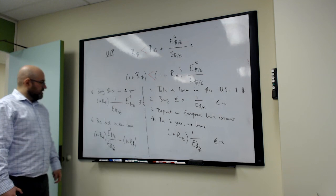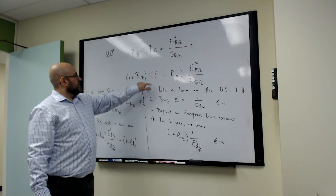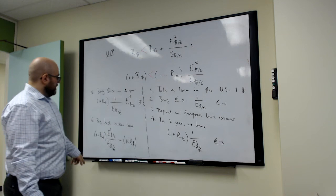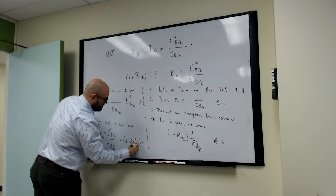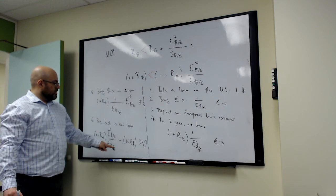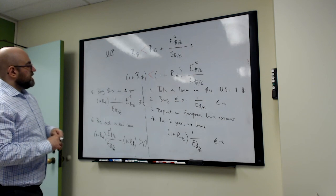And because we assume that the interest rate, the dollar return in the US is lower than the dollar return in Europe, this is exactly the right hand side of that, and this is the left hand side, so this is positive. So what this means is that after paying back my initial loan, I get to pocket the difference. So this is the idea of the arbitrage.